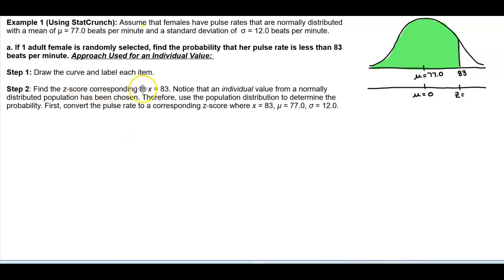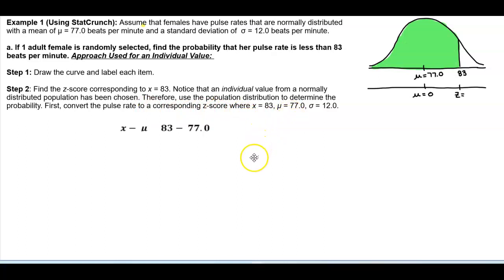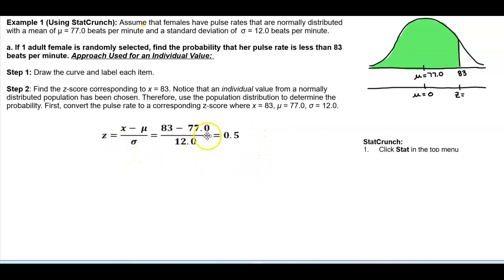Since we're looking for one adult female, we use the population distribution to determine the probability. We convert the pulse rate to a z-score where x = 83, the mean is 77, and the standard deviation is 12. Plugging into the formula: (83 − 77) ÷ 12 = 0.5. So the z-score is 0.50.